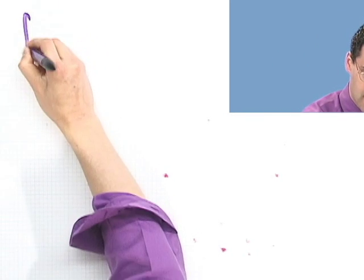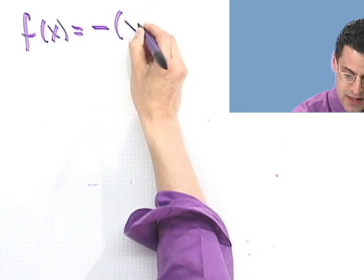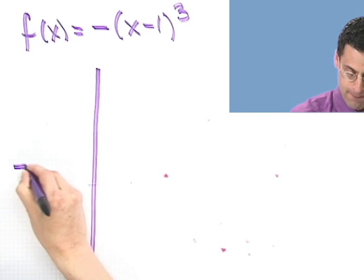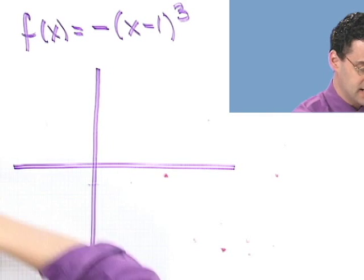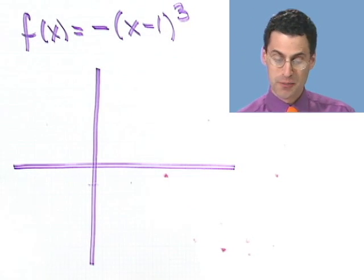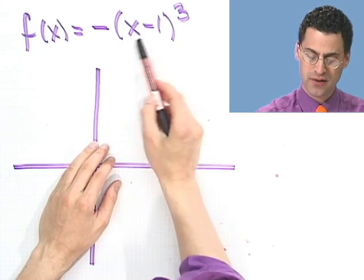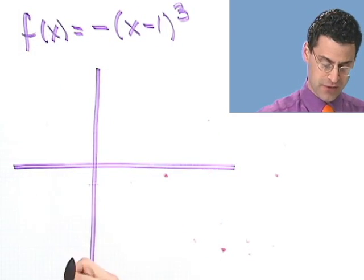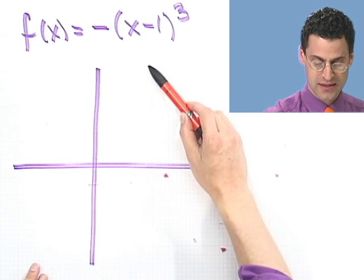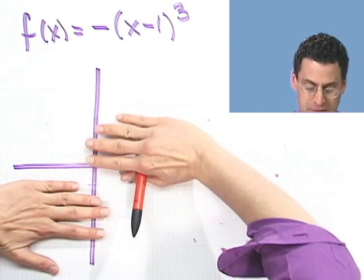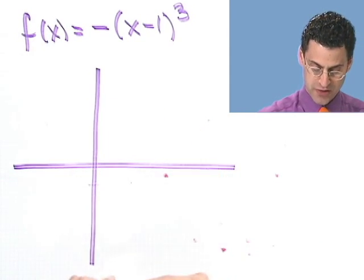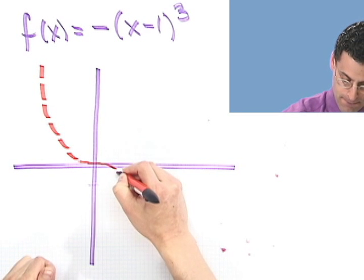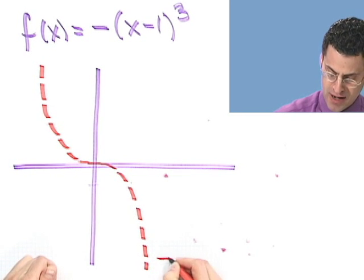Let's try f(x) = -(x-1)³. To tackle this, I'll do some intermediate steps. First, I notice this is basically something cubed, but with a negative sign in front — which means it won't be the standard cubic shape. The negative means it's a flip over the x-axis. So I start by drawing x cubed, then reflect it to get minus x cubed — that's a dotted reference curve.